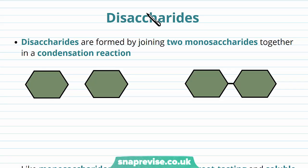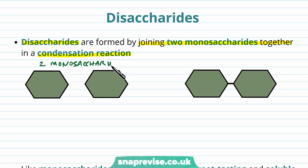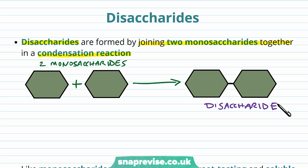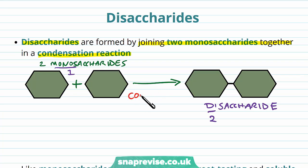A disaccharide is another type of carbohydrate molecule that you need to be aware of. When we form a disaccharide, we've joined two monosaccharides together in a reaction called a condensation reaction. Monosaccharides are the simplest units of carbohydrates. Adding two of these together forms a disaccharide — mono means one, whereas di means two. Making larger chains out of individual units always involves condensation reactions.